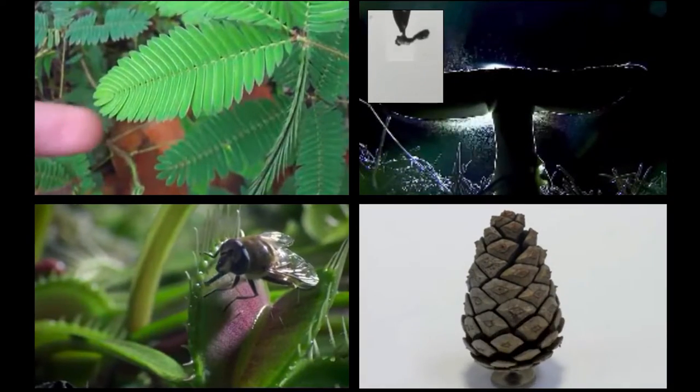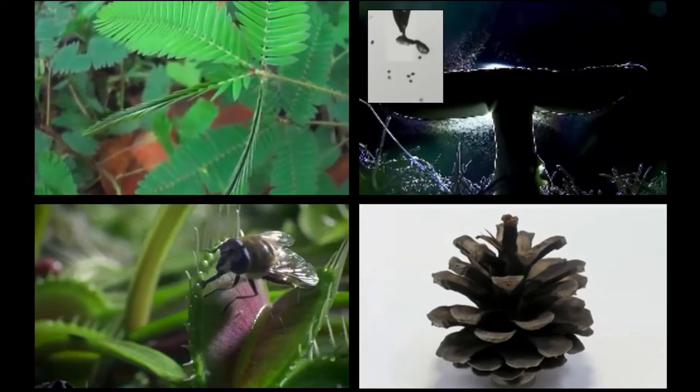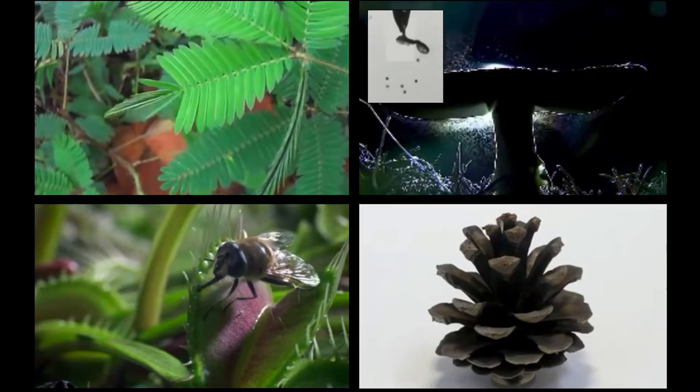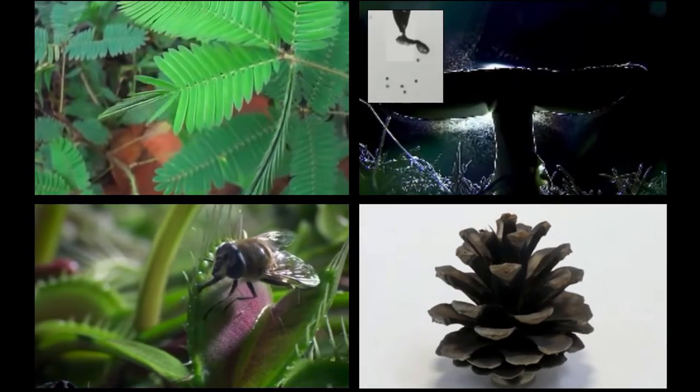Plants do not have muscles, but still can move. Most botanical movements are based on transport of water in and out of plant tissues. Examples include mimosa leaves, mushrooms, Venus flytrap, and pine cones.